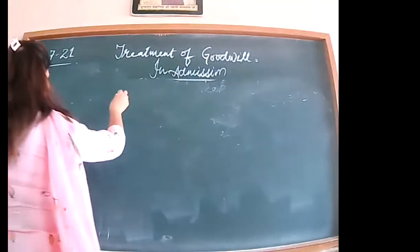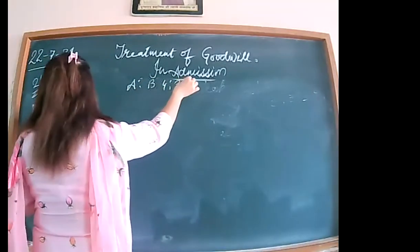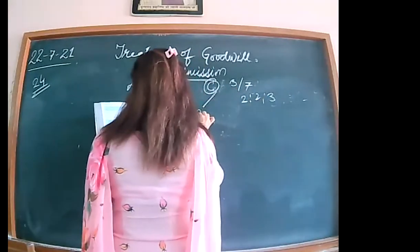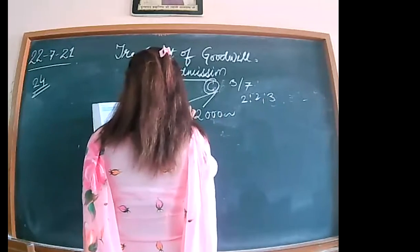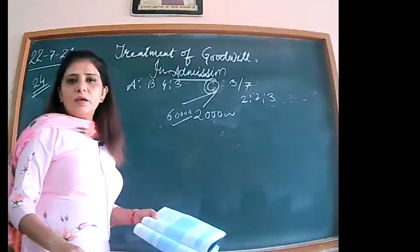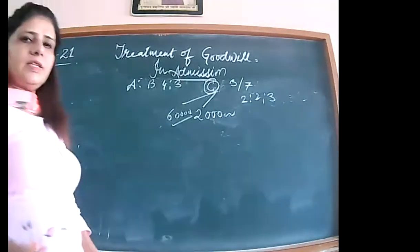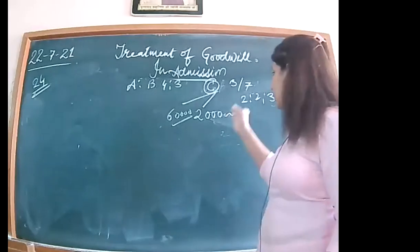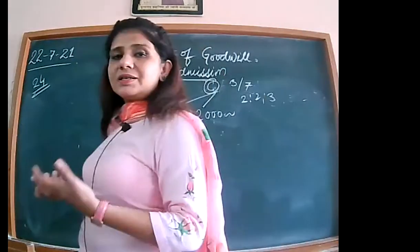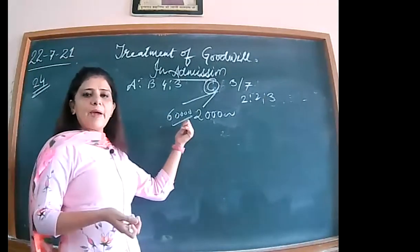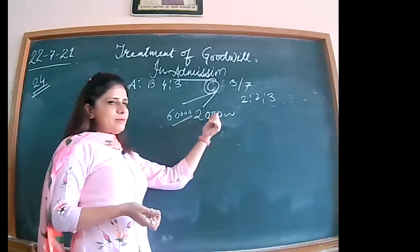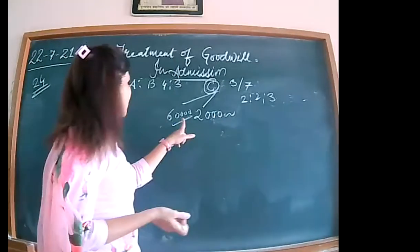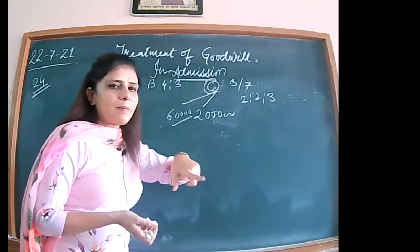Now illustration 24: A and B are partners with profit sharing ratio 4 is to 3. C has been admitted for 3/7 share, and the new profit sharing ratio is given. C brings two lakh for his capital and sixty thousand for his share of goodwill. You add them up — bank account gets two lakh sixty thousand — and the sixty thousand is divided between the old partners in their sacrificing ratio.